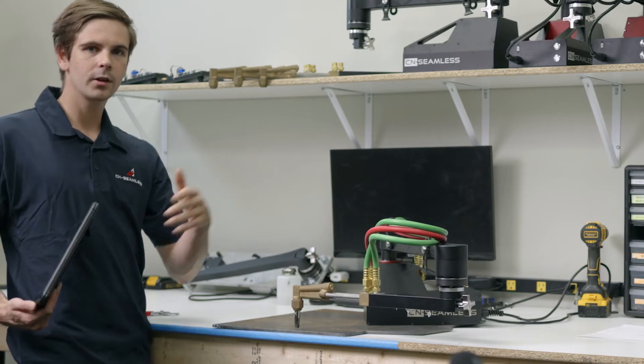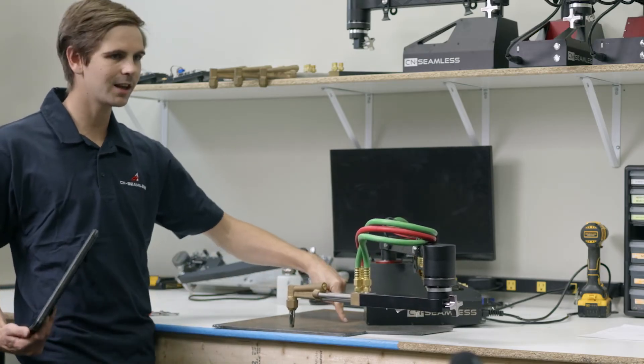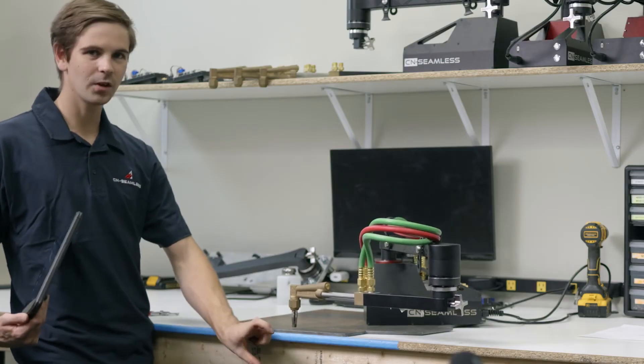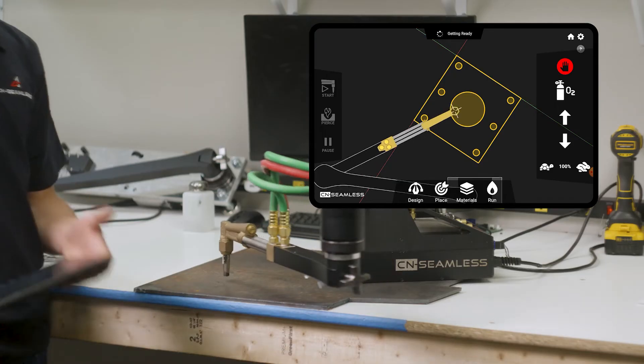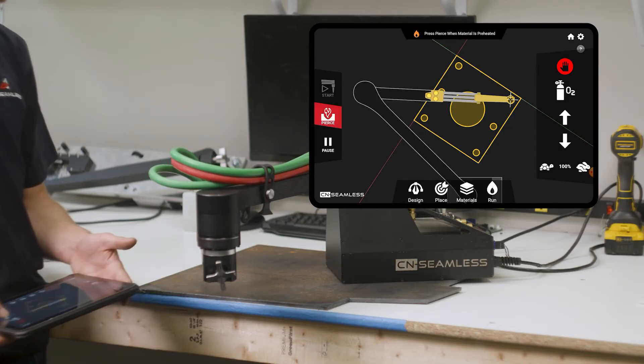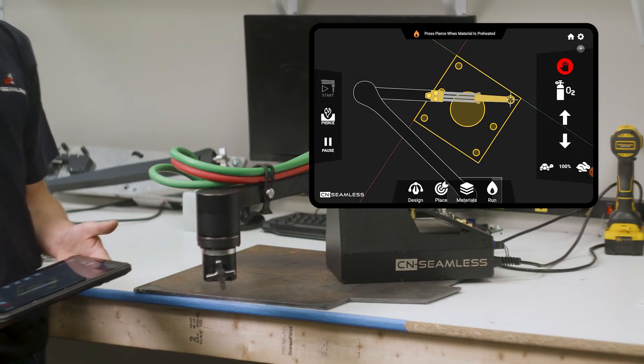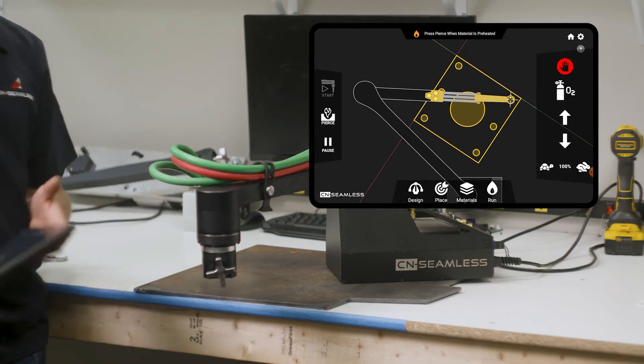So if you have a really warped piece of material, you might have to adjust the height during a cut. So you might have a good height here, and then it warps down, and you're a little high off the material over here. So what you can do is you can adjust the height during the cut. So I'm going to go ahead and lift this up like that. You can lower back down, and that lets you set the right height for every spot of material.